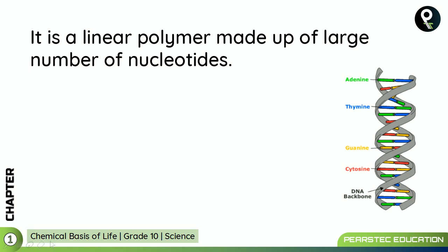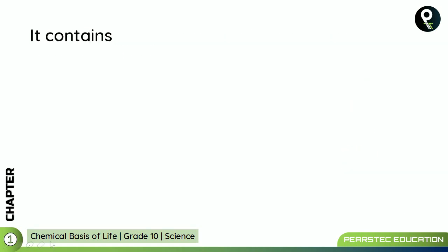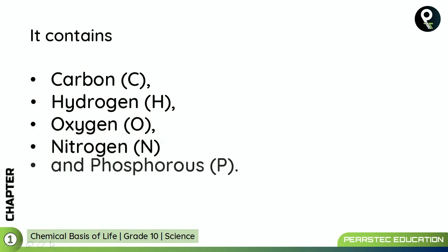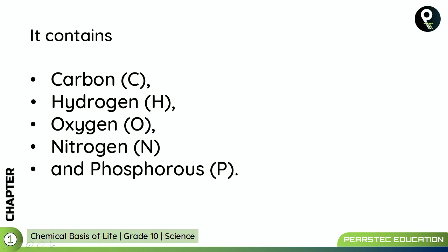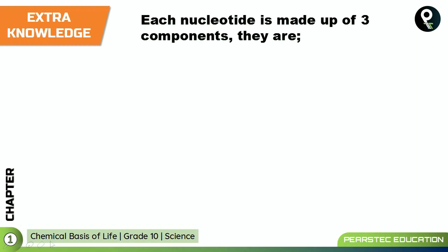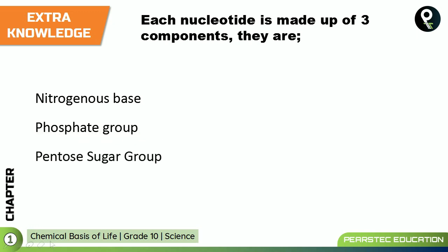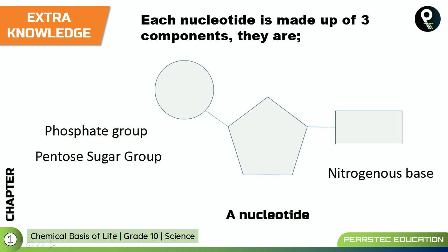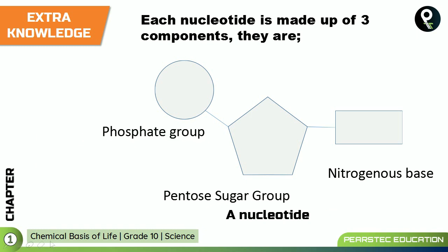Nucleic acid is a linear polymer made up of a large number of nucleotides. It contains carbon, hydrogen, oxygen, nitrogen and phosphorus — you should remember this. For your extra knowledge, each nucleotide is made up of three components: a nitrogenous base, a phosphate group, and a pentose sugar group. The nitrogenous base, phosphate group, and pentose sugar group are visible in the diagram shown.